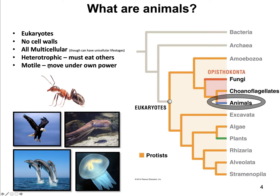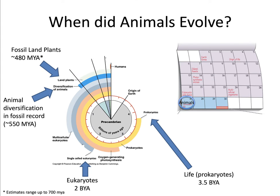The other thing that unites all animals, even though they are a very diverse group, is that they're motile. Motile just means they're able to move under their own power. Whether you're crawling, swimming, or flying, they're all able to move. That's something that's unique about animals.